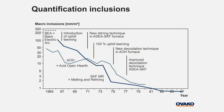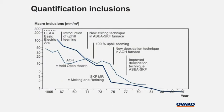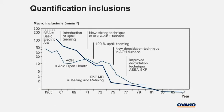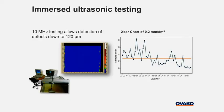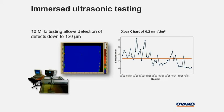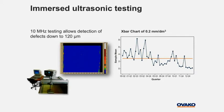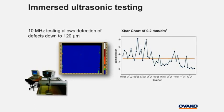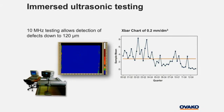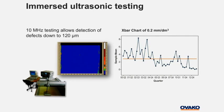Even more important is the work started in the mid-1980s of quantifying inclusions with immersed ultrasonic testing. This figure shows that all the work with teeming protection, stirring technology, and deoxidation practice made the step-down test method obsolete. Immersed ultrasonic testing gave new opportunities to develop the process, and for BQ steel, this technique is applied on a statistical basis to ensure that high product quality is maintained.